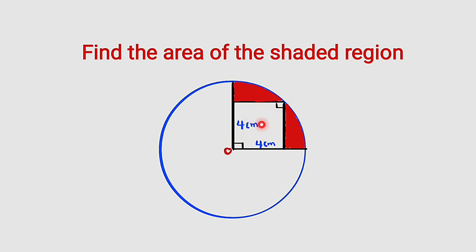Then we have a square here of dimension 4 centimeters, and this is the region we are looking for. To find the area of this region, we have to find the area of the entire sector, then subtract the area of the square.